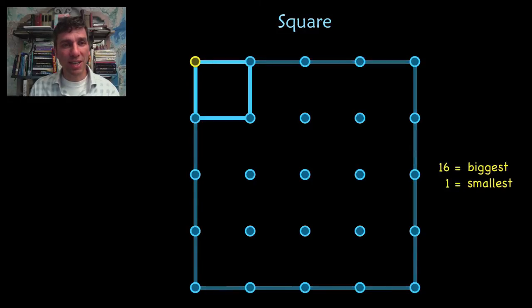The smallest square is that one. The biggest one had an area of 16, the smallest an area of 1.